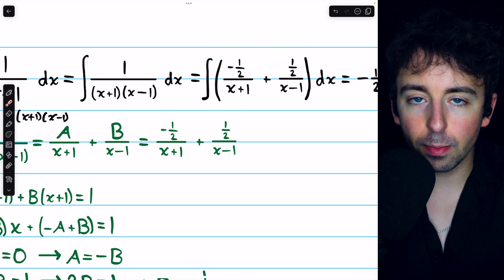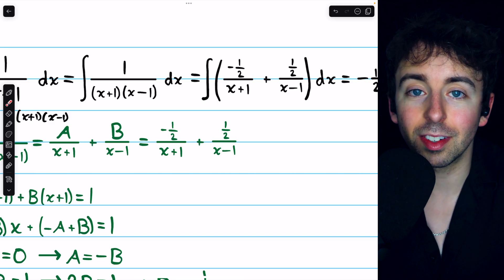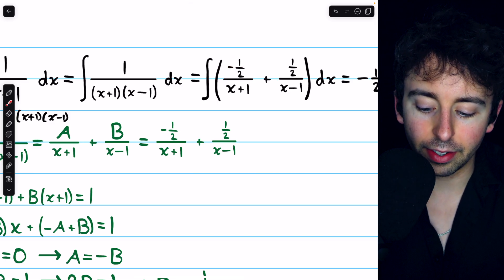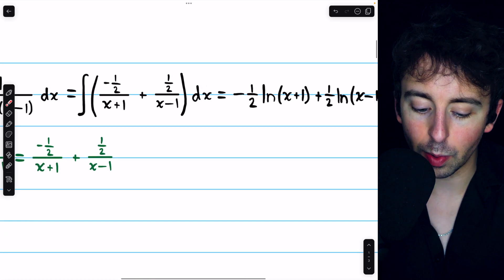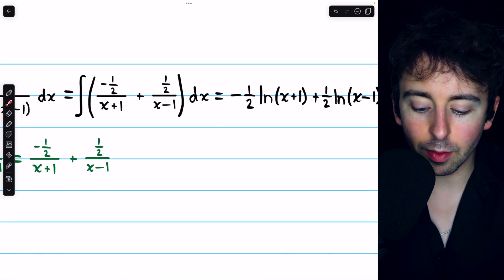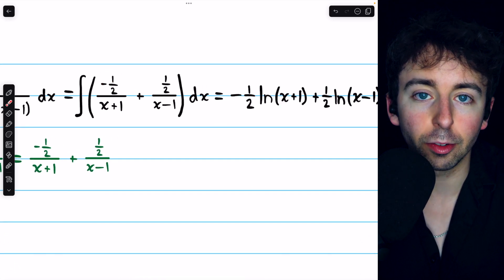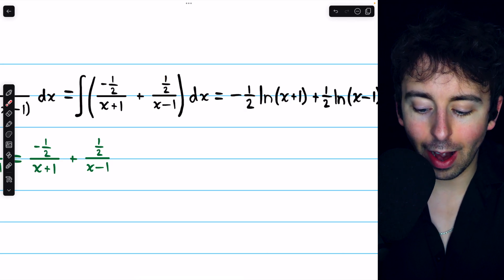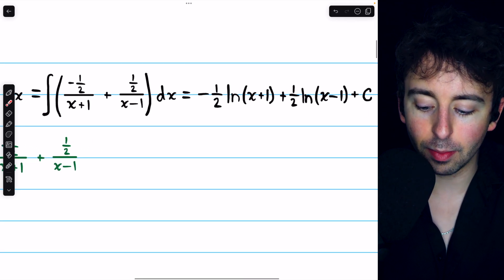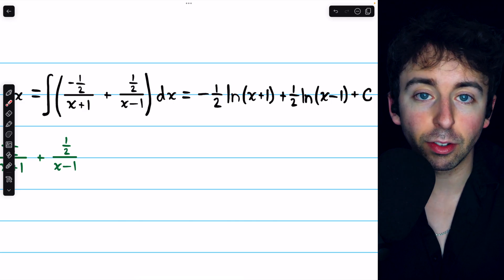Each of these terms has an integral which is just a natural log with this coefficient. The first fraction, when we integrate it, becomes negative half ln of x plus one. And the second fraction, when we integrate it, gives us one half times the natural log of x minus one.